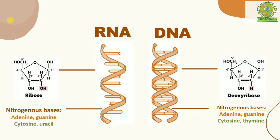RNA and DNA are somewhat similar in structure, so we'll just point out the small differences. RNA has only a single strand, whereas DNA has two strands. The first strand of DNA is bonded with another strand along with the nitrogenous bases — base pairs are present in between these two strands.